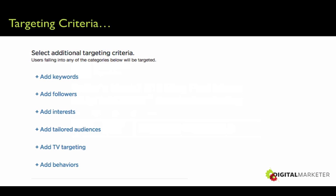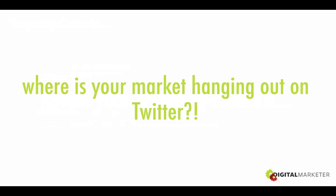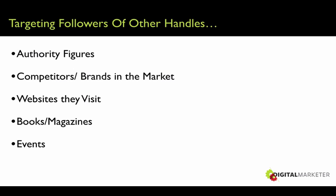Now the follower targeting option — this is where you can target people who follow specific handles. This is very similar to Facebook interest targeting, it takes research, but it's definitely the most effective form of targeting and where you should start. Because you know your market by now — you've completed the marketing checklist — you can put yourself in front of your audience because you know where they're hanging out. Revisit your targeting checklist: where is your market on Twitter? What authority figures might they follow? Competitors, brands, websites, books, magazines, events — who would your ideal prospect follow?